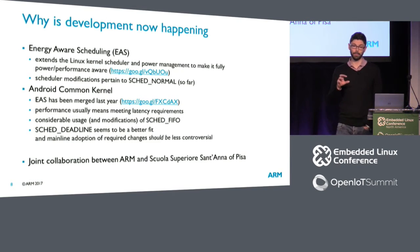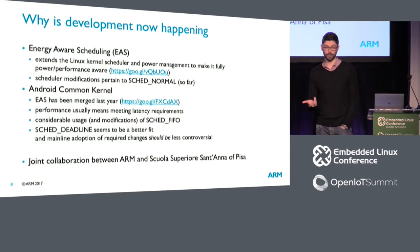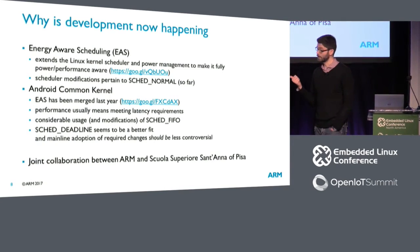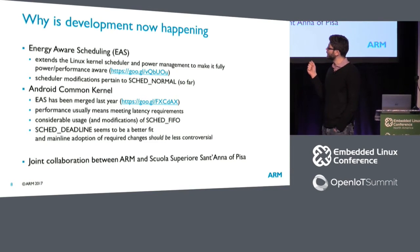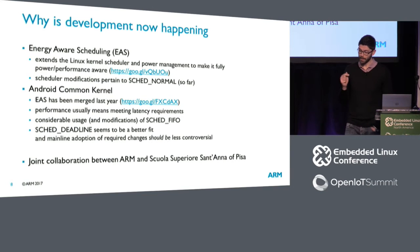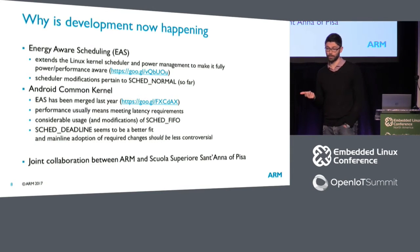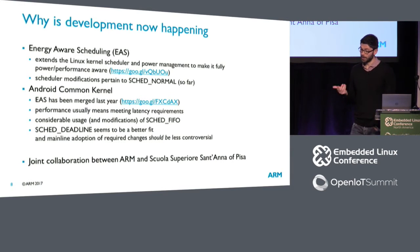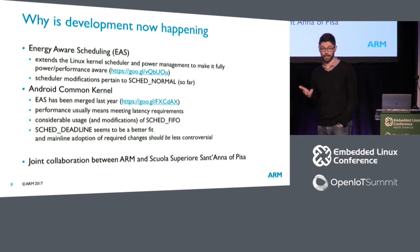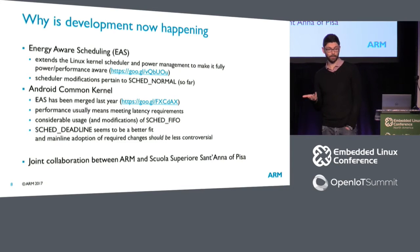So why is this development happening now? Well, at ARM we've been working for the last four or five years on what we call energy-aware scheduling — basically a set of extensions to both the Linux kernel scheduler and several subsystems, for example CPUFreq, to make them power and performance aware: meeting the performance requirements of user space applications while saving energy.